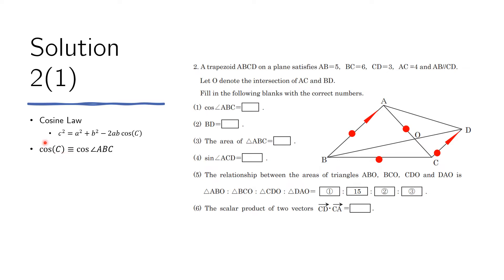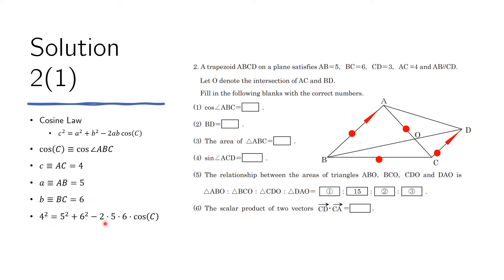Let's say cosine C is this angle. C is this length, which is 4. Let's choose A to be 5 and B to be 6. Plugging all these values into the cosine law, we get cosine of C equals 3/4. So write that there.